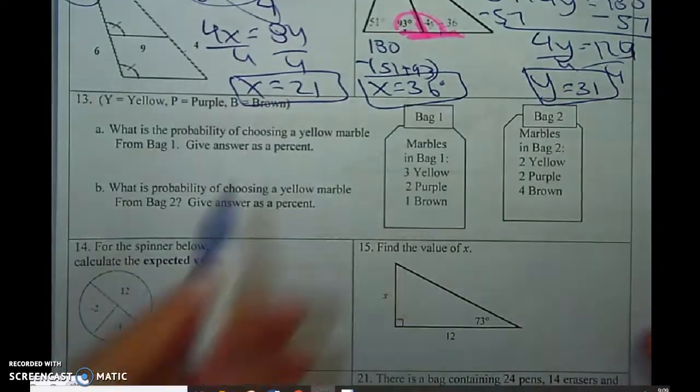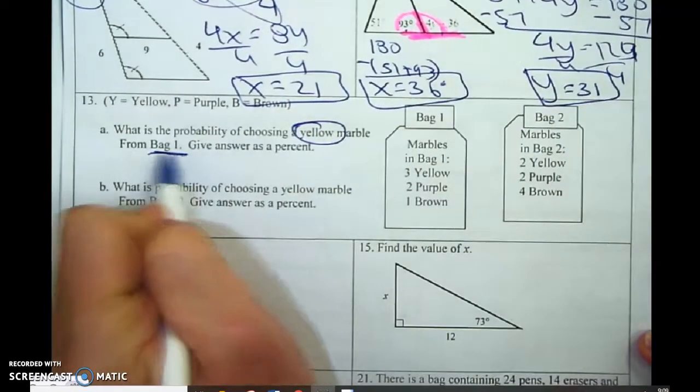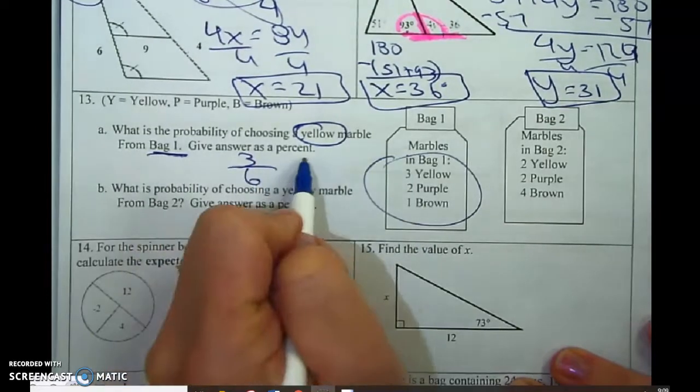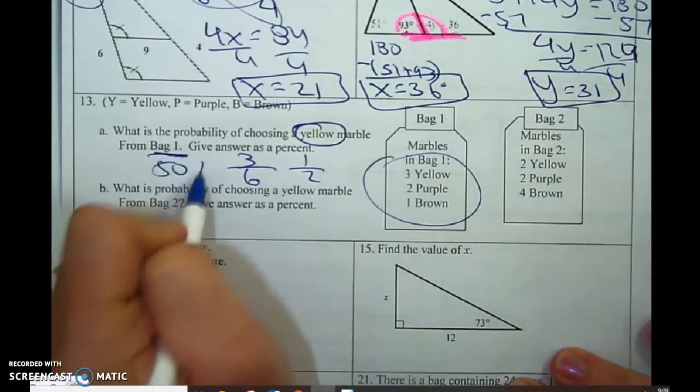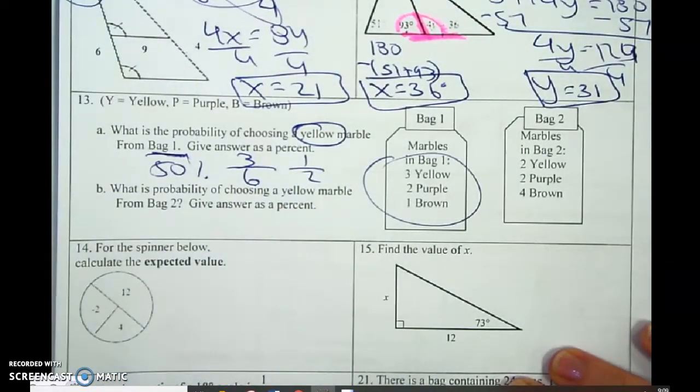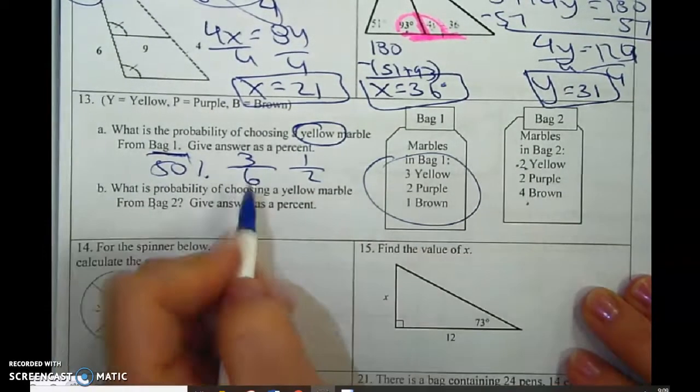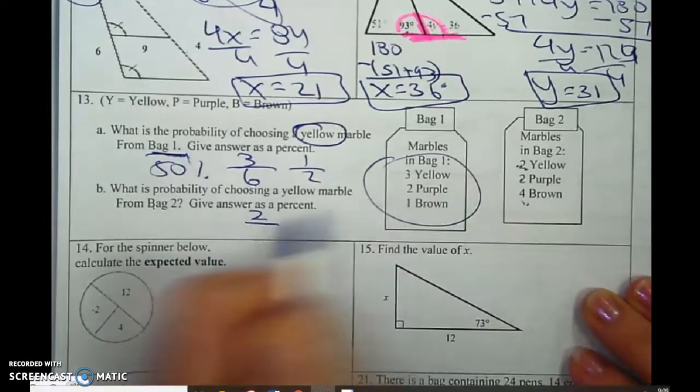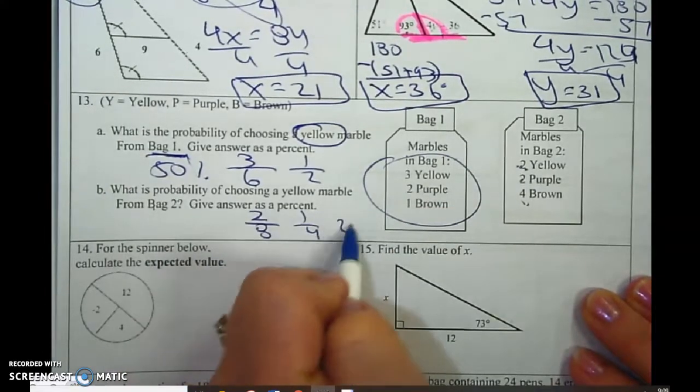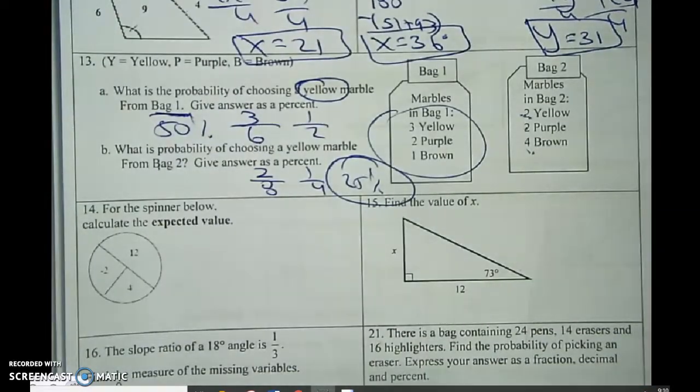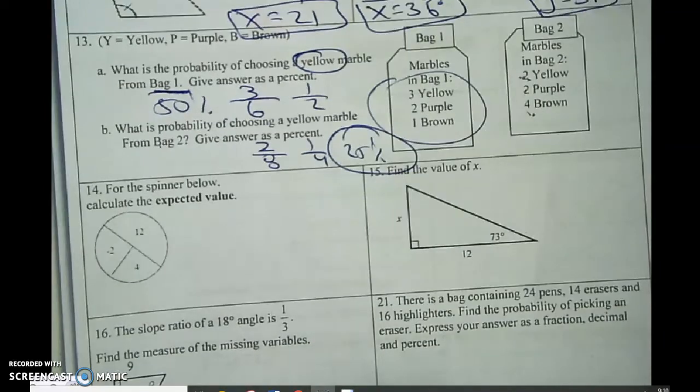Probability. They want to know of choosing a yellow marble from bag 1. So there's 3 yellows out of 6, which is 1 half, which is 50%. So they want to know of choosing a yellow marble 2 out of 2, 4, 8, which is 1 fourth, which is 25%. Expected value. So I'll do the rest of the problems in the next video.